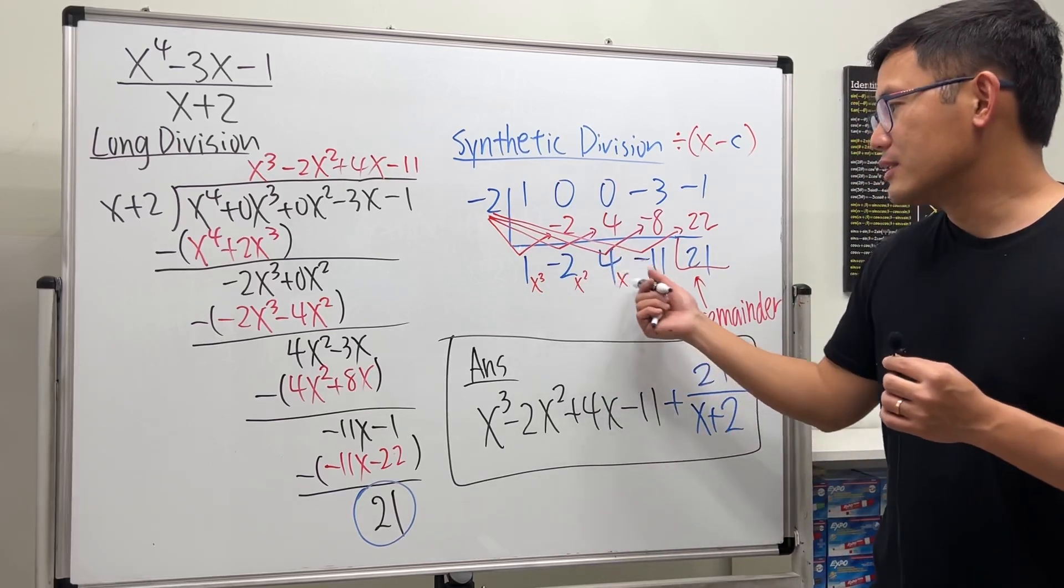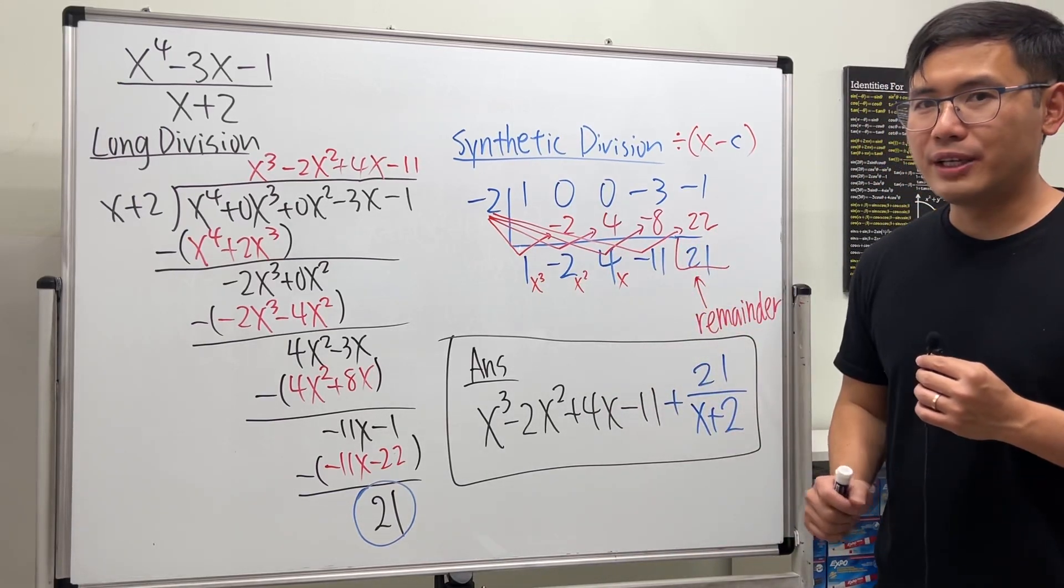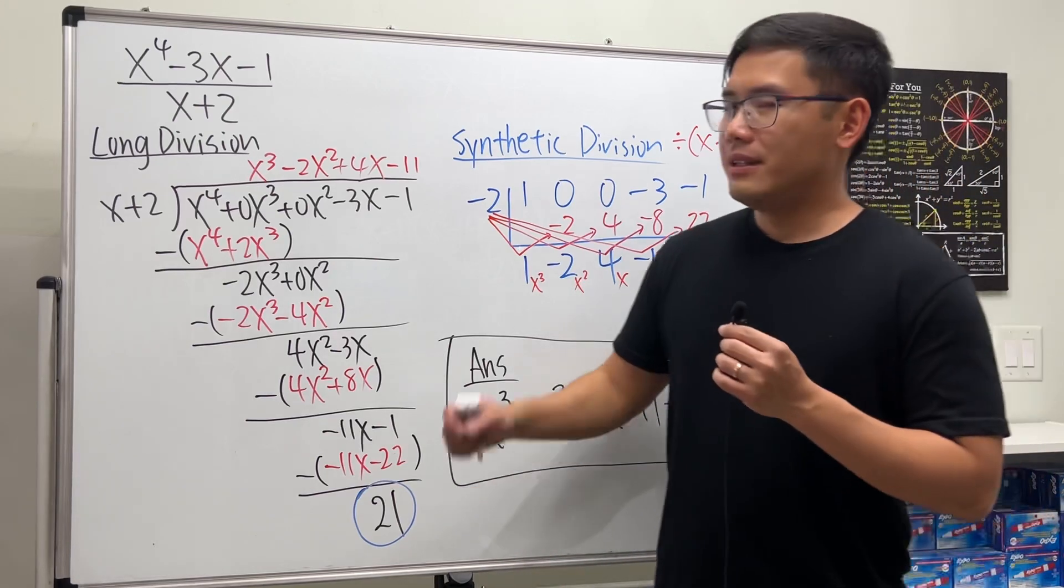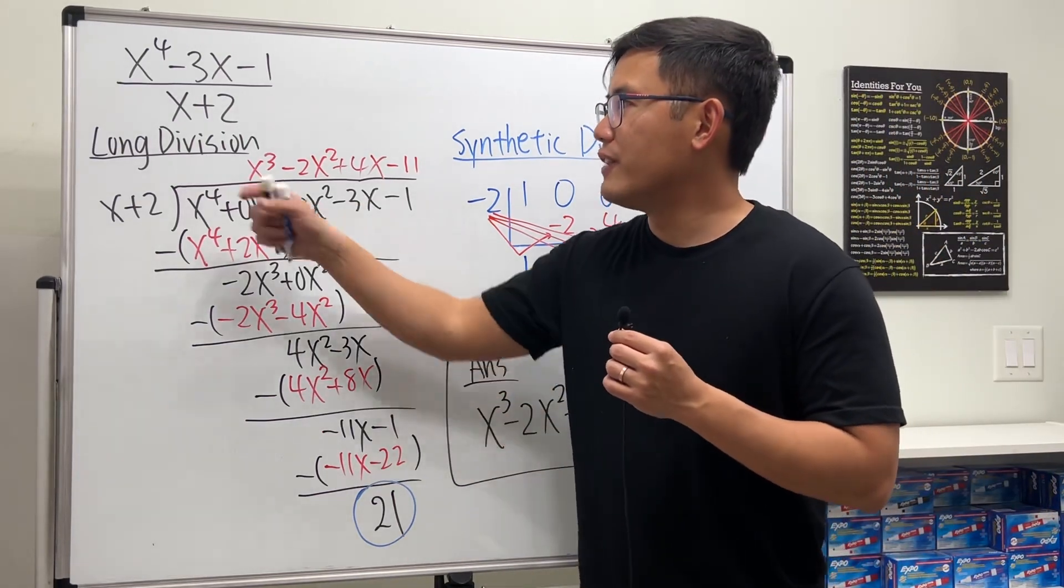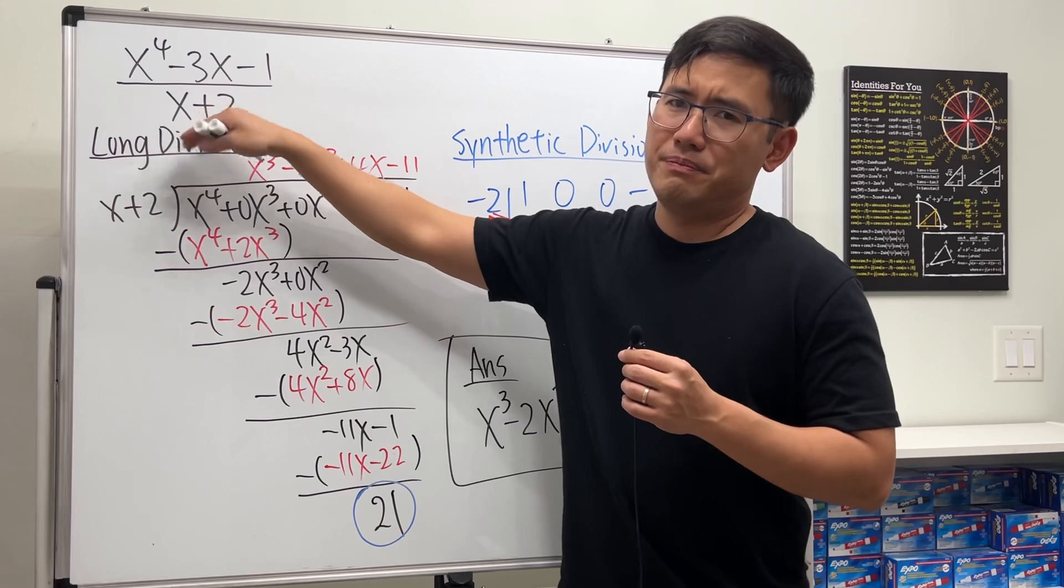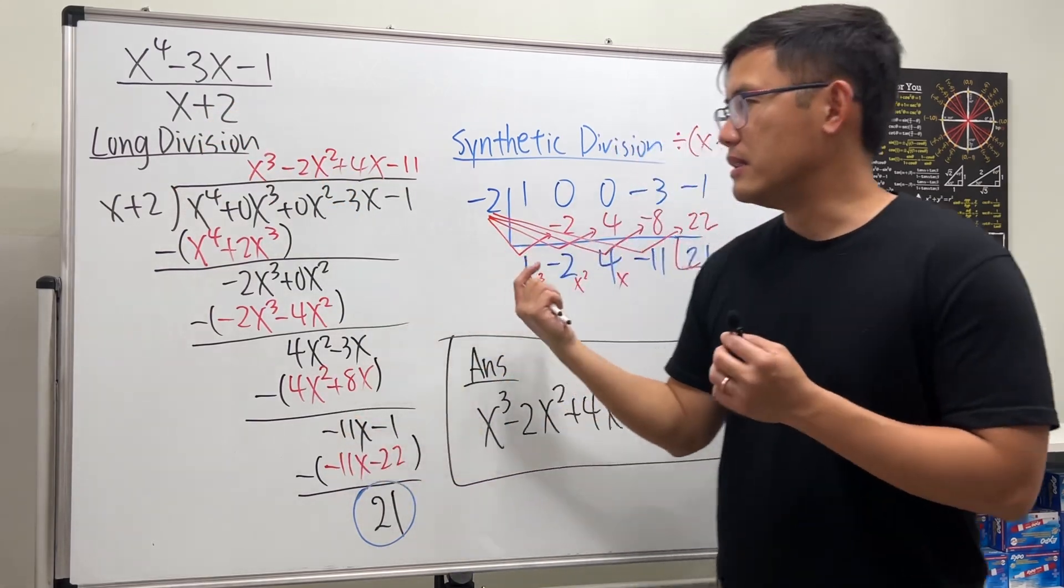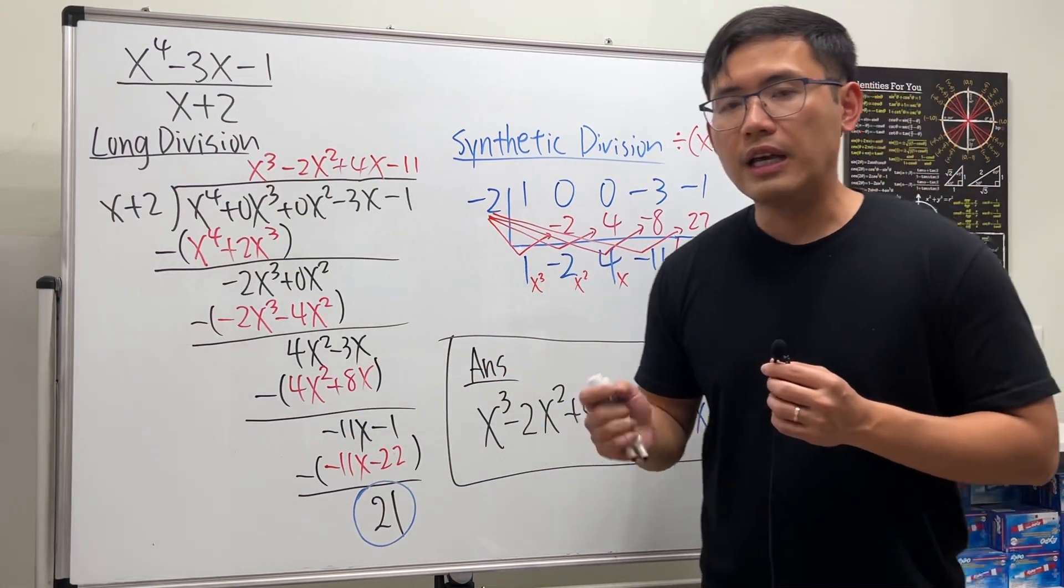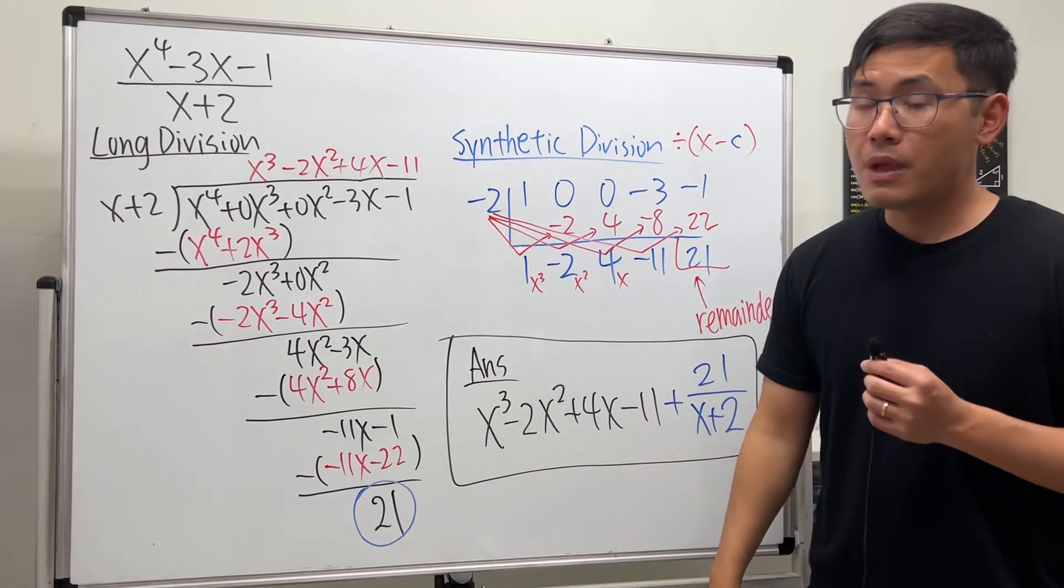I know this is so much faster, but unfortunately, it has its limitation. For example, in the next video, I'll show you guys what if we divide it by some x squared plus something else, right? Synthetic division wouldn't work. In that case, we will have to use the long division. For now though, this is it.